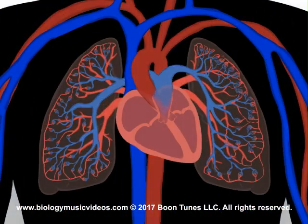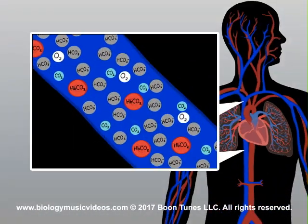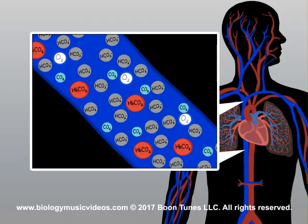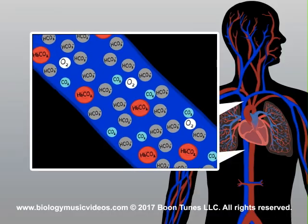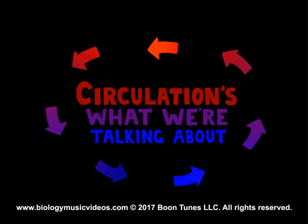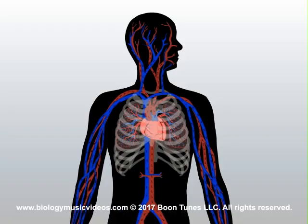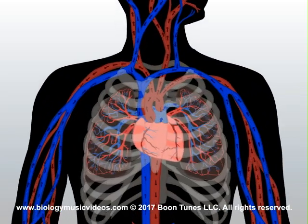We'll trace both circuits and begin with blood that's poor in oxygen. It's rich in carbon dioxide which must be released to the air outside. Circulation's what we're talkin' about — blood flows to the heart which pumps it out. Hear the heart rhythmically pulsate, forcing the blood to circulate.